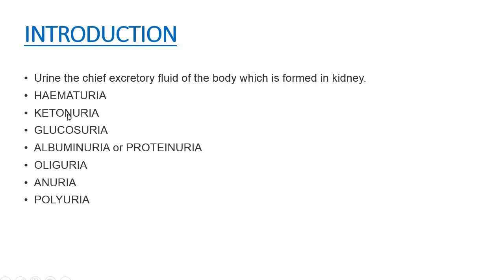The next condition is ketonuria. The presence of ketone bodies like acetone, acetoacetic acid, and beta-hydroxybutyric acid in urine is termed as ketonuria. It indicates excessive fatty metabolism, usually seen in diabetes, starvation, pregnancy, etc.